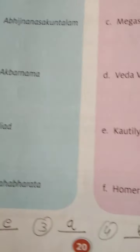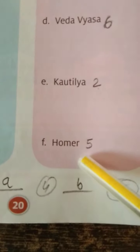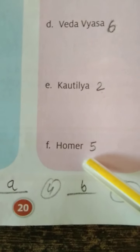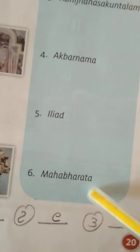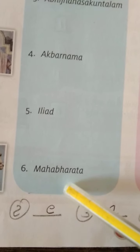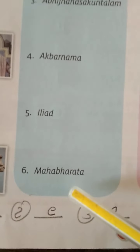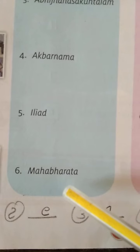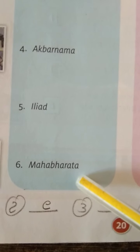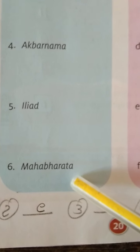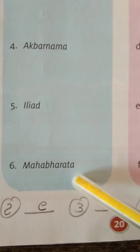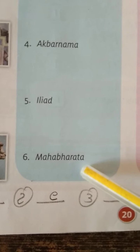Number five is the Iliad. The Iliad is also a famous book and it is written by Homer. Number six is the Mahabharata — I think so many students know who wrote the Mahabharata. The Mahabharata is a Hindu book.